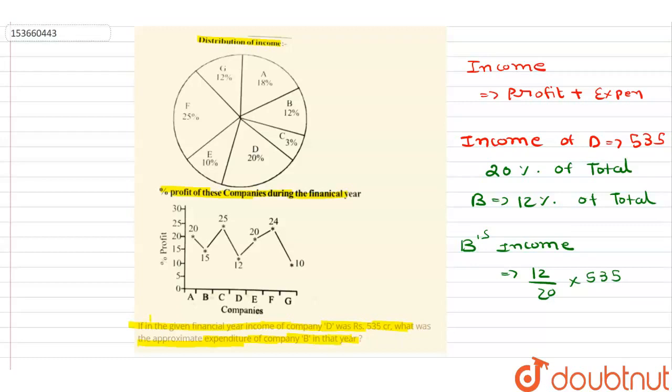Now I want to find approximately expenditure of company B in that year. So company B ka expenditure kitna hoga? Profit kitna hoga? Company B ka profit is 15 percentage. Profit agar 15 percent hai, total is always 100. Profit 15 percent hai toh expenditure kitna hoga? B ka, that would be 85. B ka expenditure 85 percentage hoga.